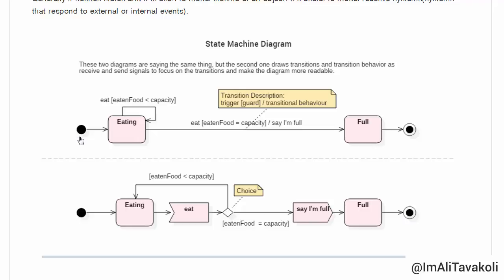Here, again, the same thing is going to happen. We will start our process by the initial state notation. Then, we will go to our first state which is eating. But, unlike the other diagram which we have shown the transition behavior by the receive and send signals. Here, we are going to use transition description. So, when the eat event triggers, if this guard condition is true,